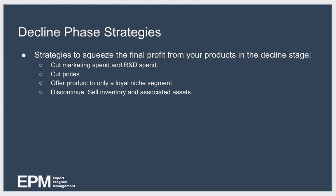There are a number of strategies you can use to squeeze the final profit from your products during the decline stage. You could cut marketing and R&D spend, cut prices to maintain competitiveness, or consider offering the product to only a loyal niche segment that is inexpensive for you to service. Or you could discontinue the product — if it's no longer profitable, it may also make sense to sell off any outstanding inventory or associated assets, such as machinery.